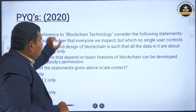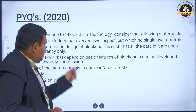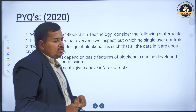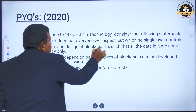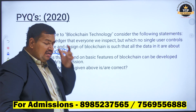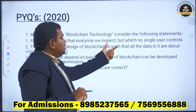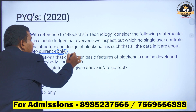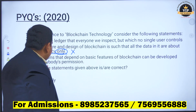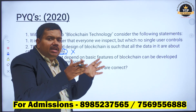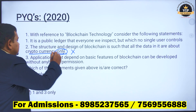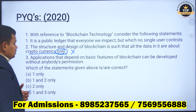From the 2021 prelims: with reference to blockchain technology, consider the following statements. Statement 1: it is a public ledger that everyone can inspect but no single user controls. Statement 2: the structure and design of blockchain is such that all the data in it is about cryptocurrencies only. Blockchain technology is not cryptocurrencies only, so statement 2 is obviously wrong. Statement 3: applications that depend on basic features of blockchain can be developed without anybody's permission. Statements 1 and 3 are correct, so the answer is D.